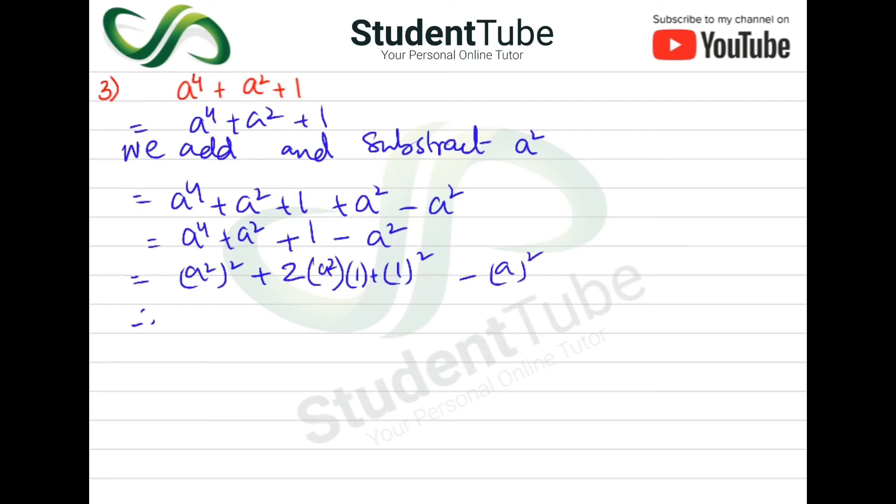This formula applies: (a + b)² = a² + 2ab + b². So we have (a² + 1)² - (a²), which can be written as (a² + 1)² - a².